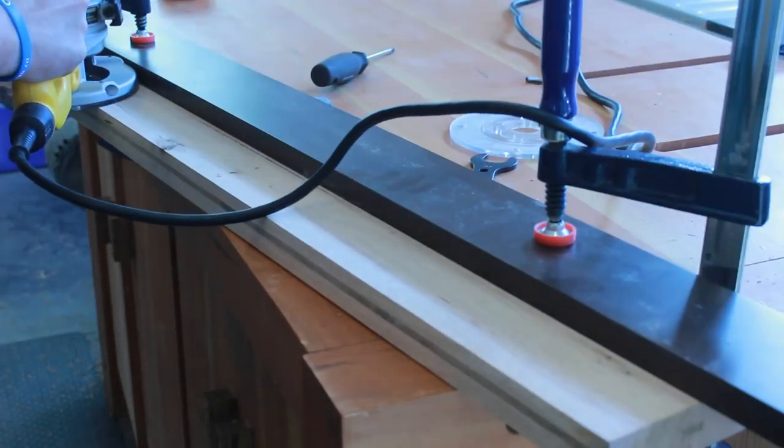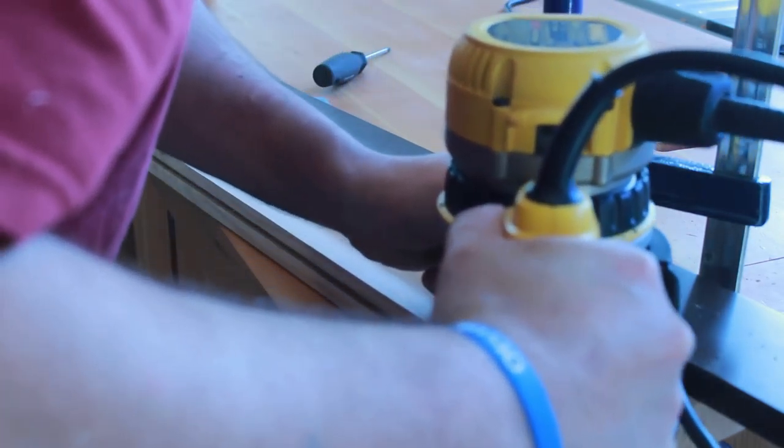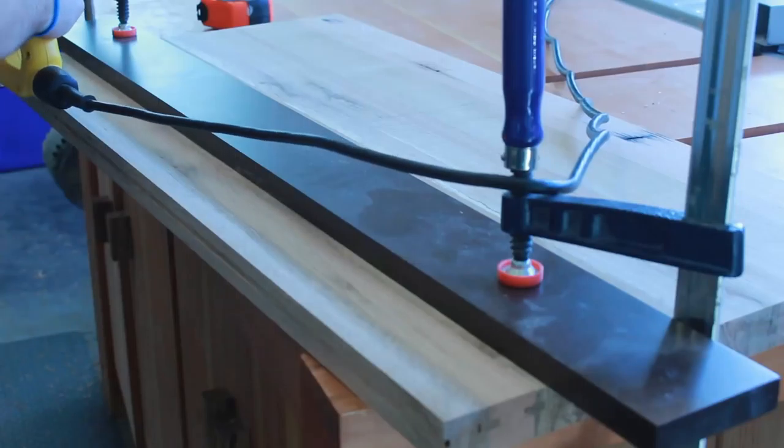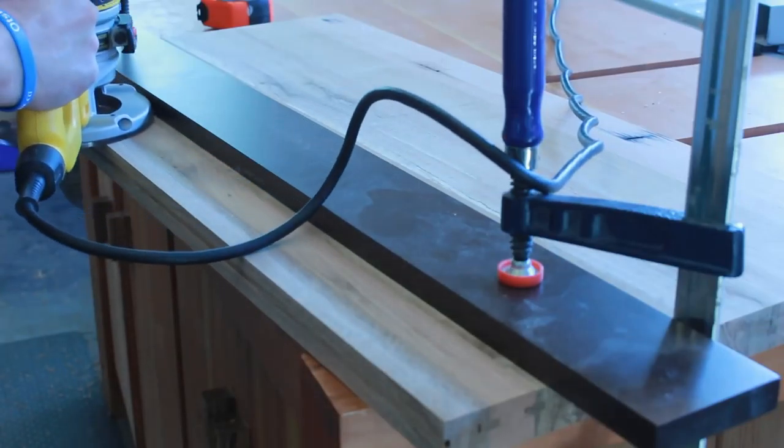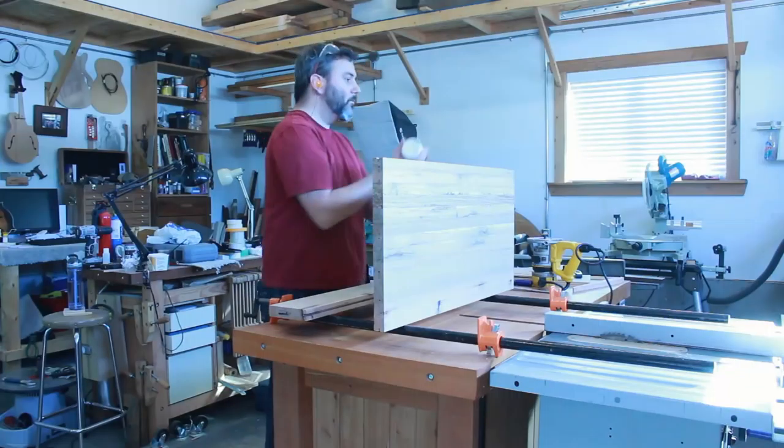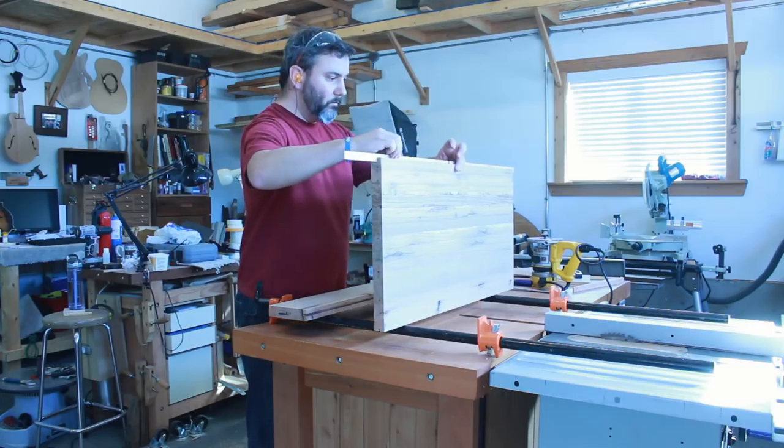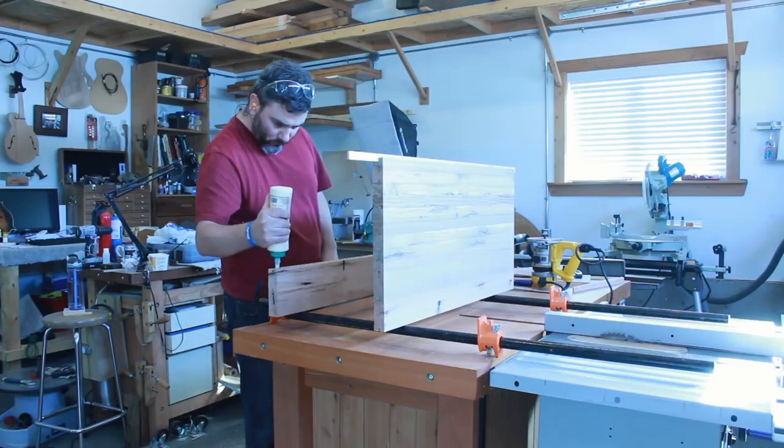Once I'm happy with how everything looks, I'm gonna route my channel, which is basically exactly where the old spline used to be. I'm redoing that and then I'll do the glue up. I'm gonna do the two sides, and then the centerpiece is going to be added once the glue up is done.